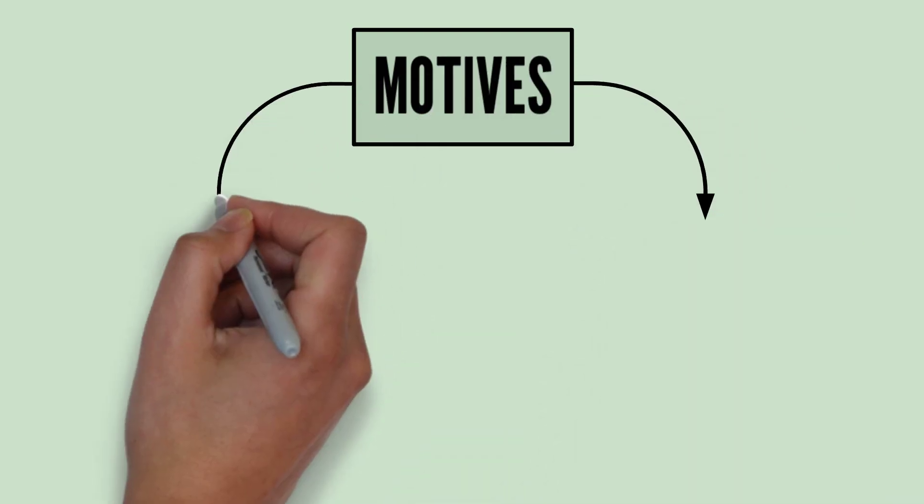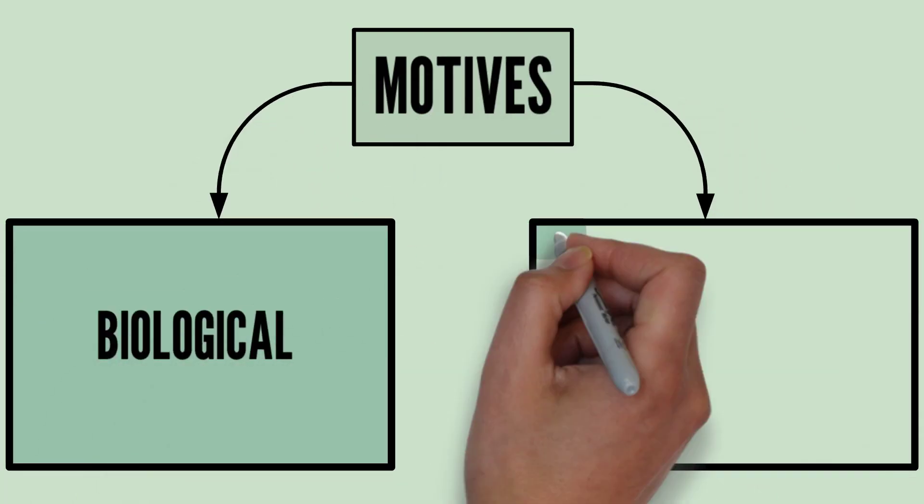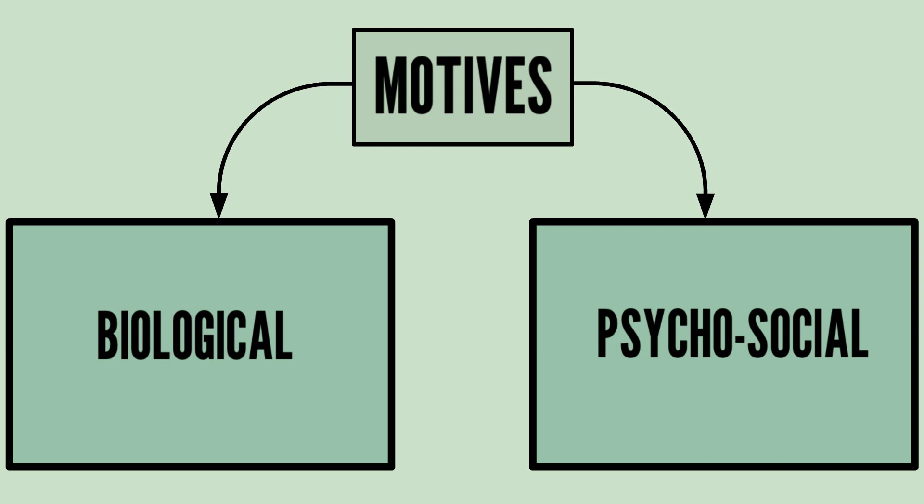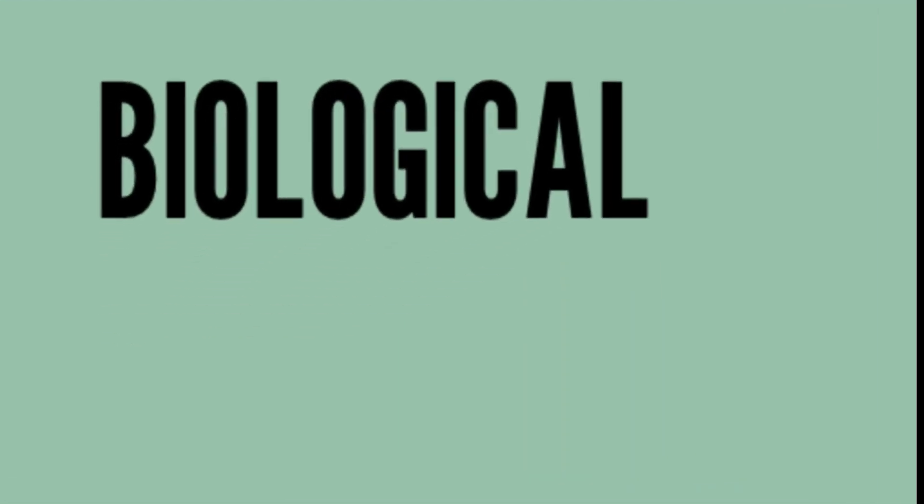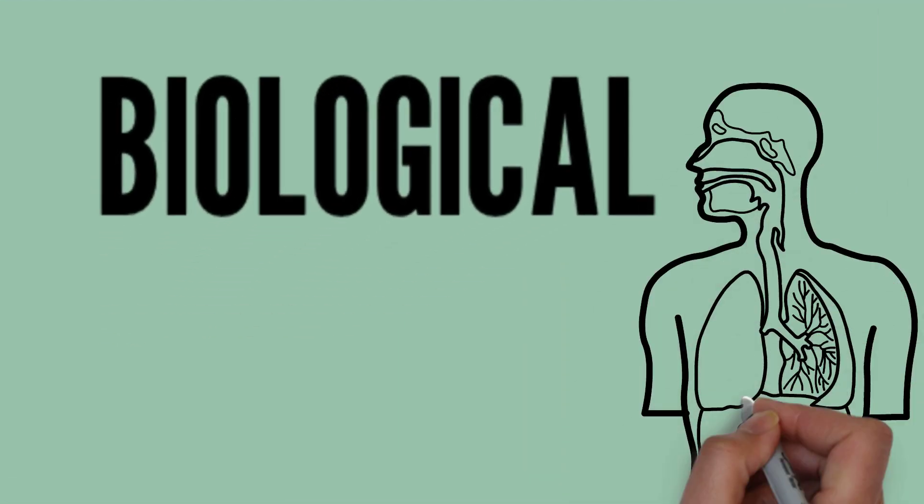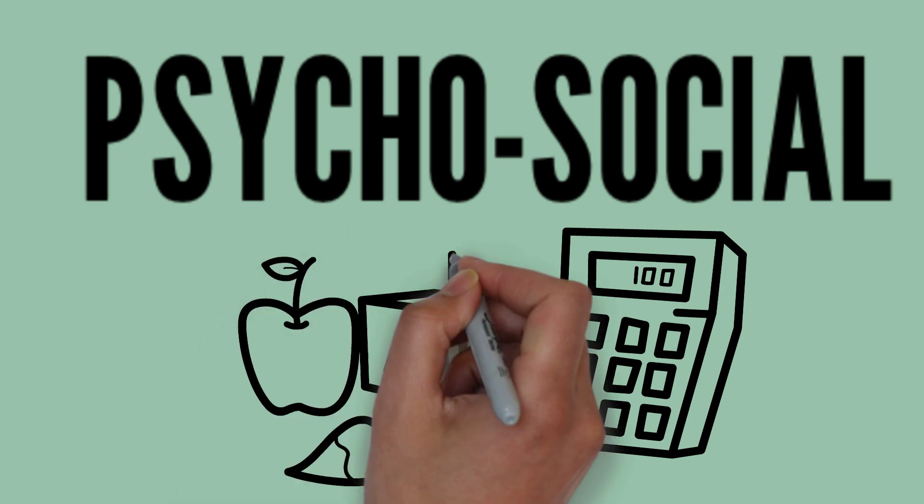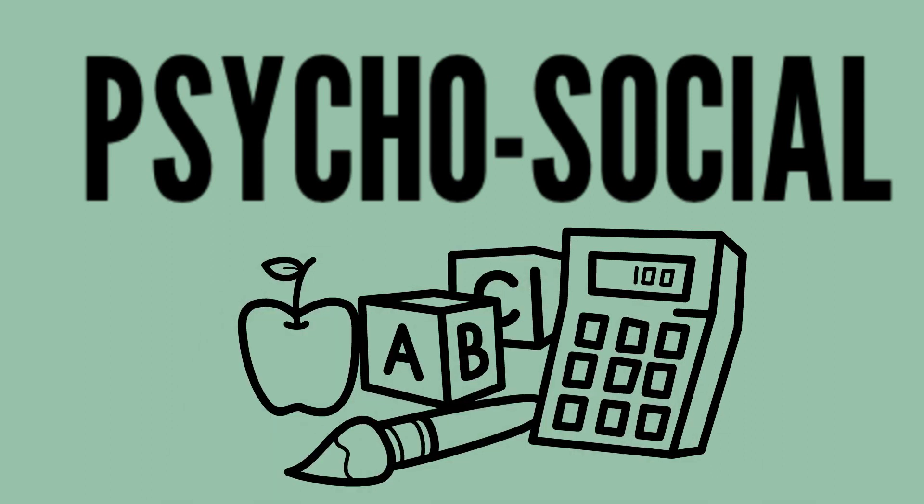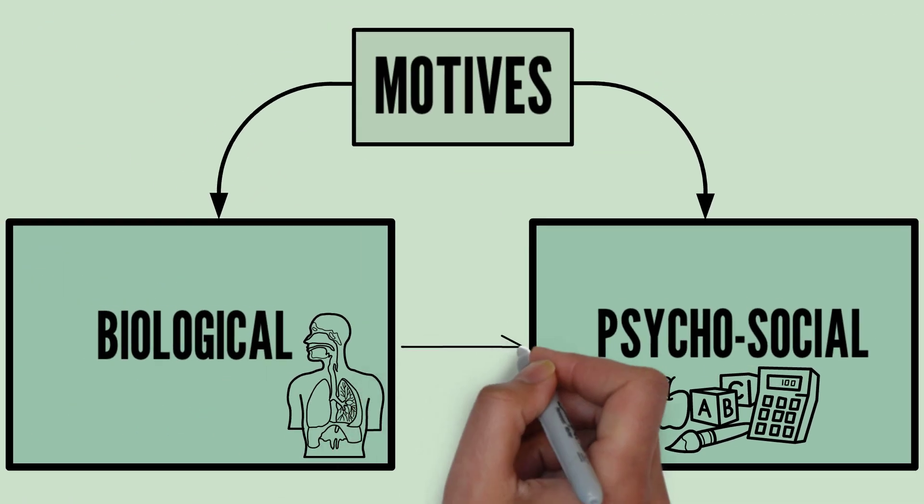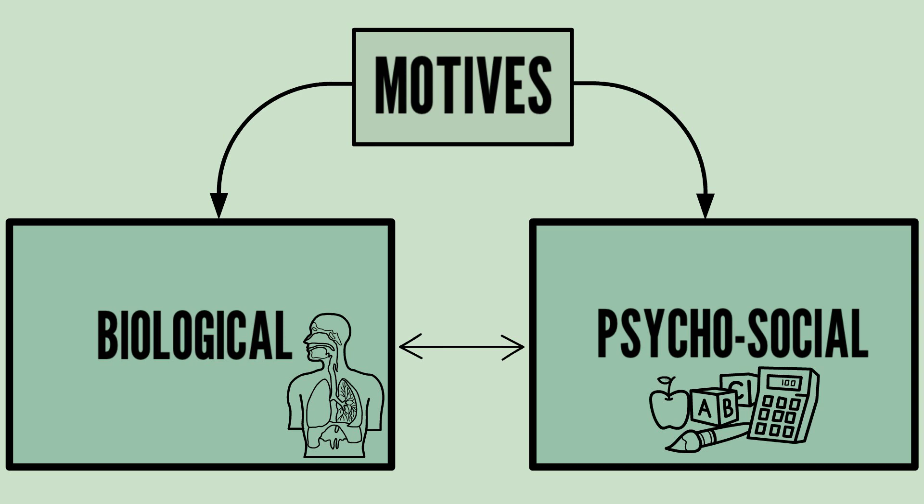There are two types of motives, biological and psychosocial. Biological motives are also known as physiological motives as they are guided mostly by the physiological mechanisms of the body. Psychosocial motives on the other hand are primarily learned from the individual's interactions with various environmental factors. However, both types of motives are interdependent on each other.